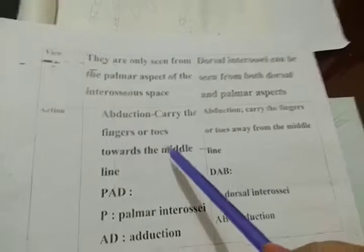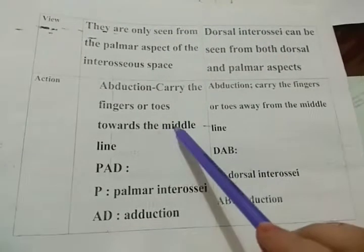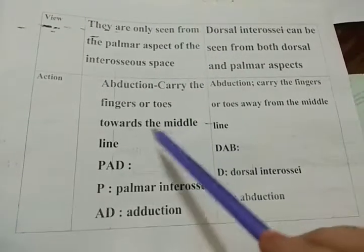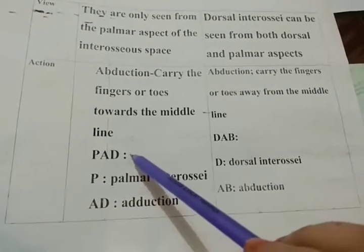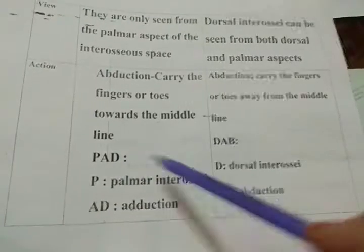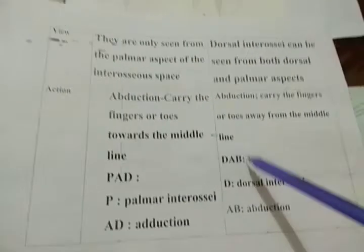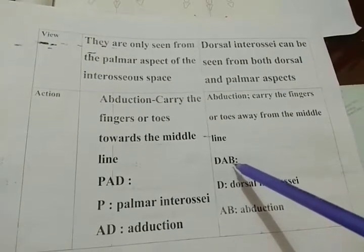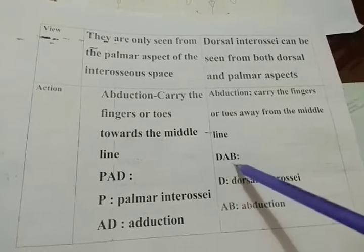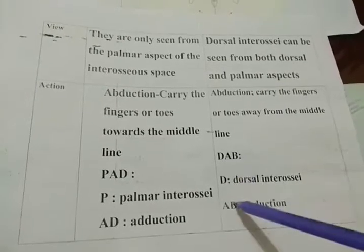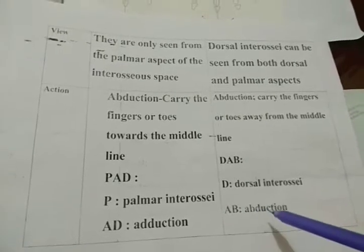Now the actions or functions of these two muscles. For palmar interossei we remember by the word PAD: P means palmar interossei, AD means adduction. For dorsal interossei we remember their functions by DAB: D means dorsal interossei, AB means abduction.